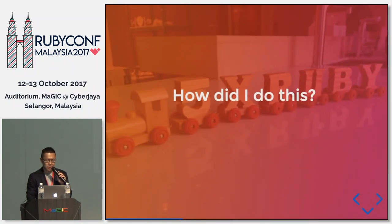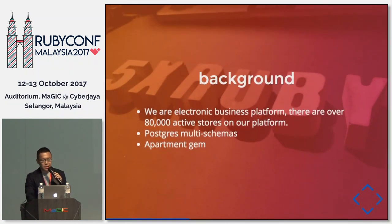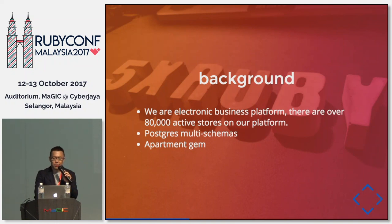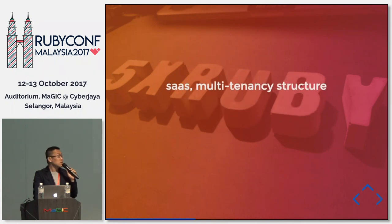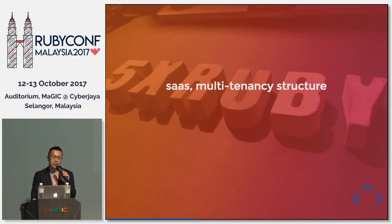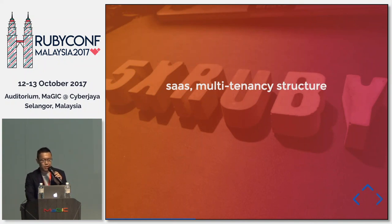How did we do this? First, our system background: we are an e-commerce platform focused on the India market, and we use a PostgreSQL multi-schema structure with the Apartment gem. The Apartment gem is very convenient for building a multi-tenancy system. Multi-tenancy is very common in SaaS — the key point is to isolate different tenants. Apartment gem is a good choice because it separates different tenants on different schemas clearly, allowing you to develop a multi-tenancy structure very quickly.